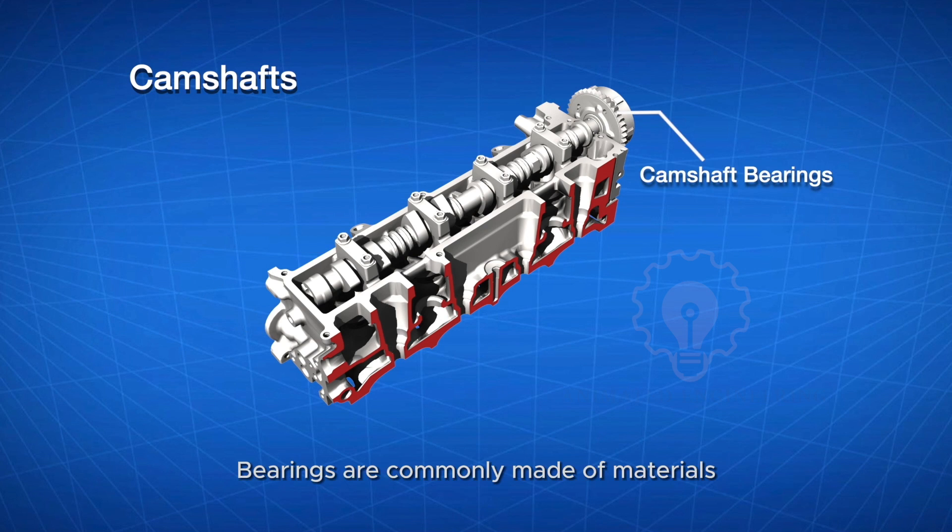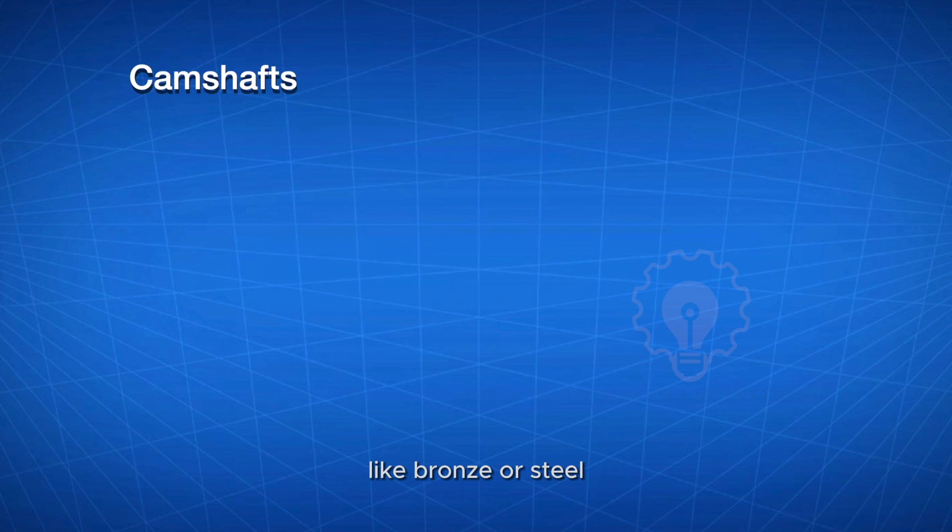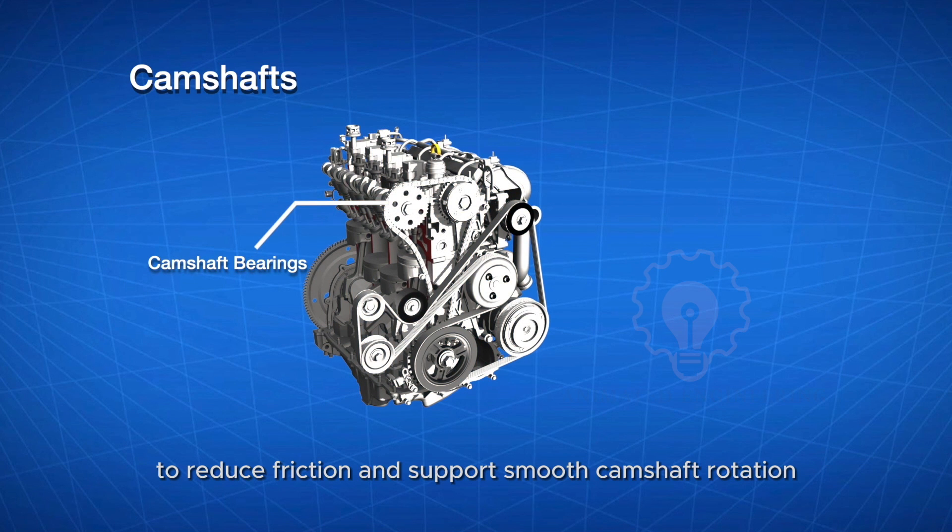Camshaft bearings: Bearings are commonly made of materials like bronze or steel to reduce friction and support smooth camshaft rotation.